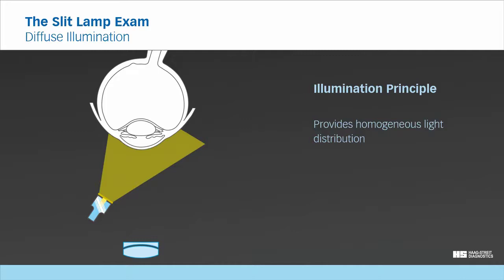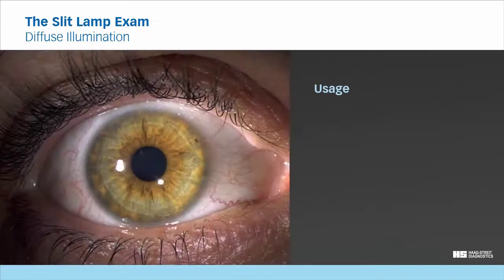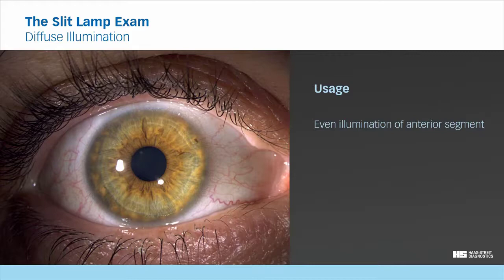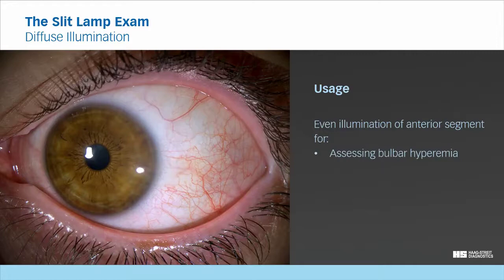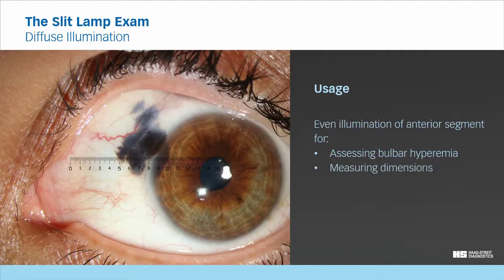Usage. It is mainly used to achieve an evenly illuminated overview of the anterior segment and external eye. This is, for example, useful for assessing bulbar hyperemia, or for providing even illumination if you want to measure dimensions with a dedicated measuring ocular.